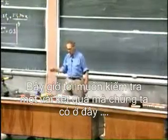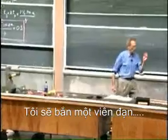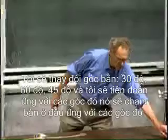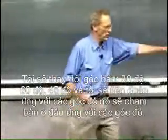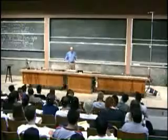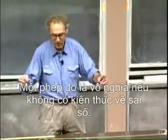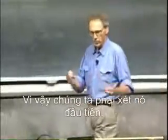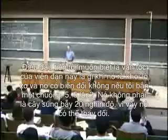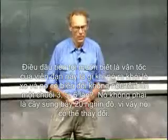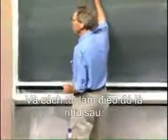I now want to test some of the results we've worked out. I'm going to shoot a pellet — a metal ball — at various angles: 30 degrees, 60 degrees, and 45 degrees, and make a prediction of where it will hit the table. But a measurement is meaningless without knowing the uncertainties. The first thing I need to know is the velocity of this bullet when it comes out of the spring, and whether it varies if I do it several times in a row. It's not a $20,000 spring gun, so it is likely to vary.